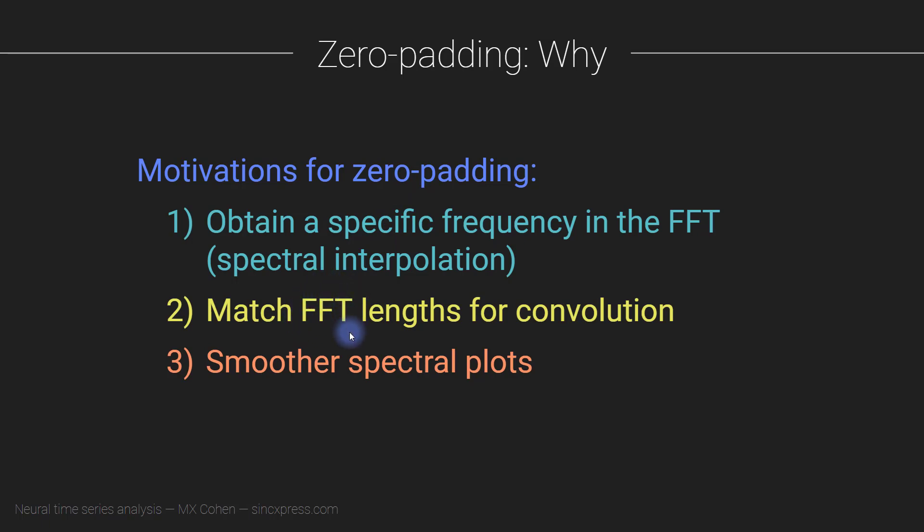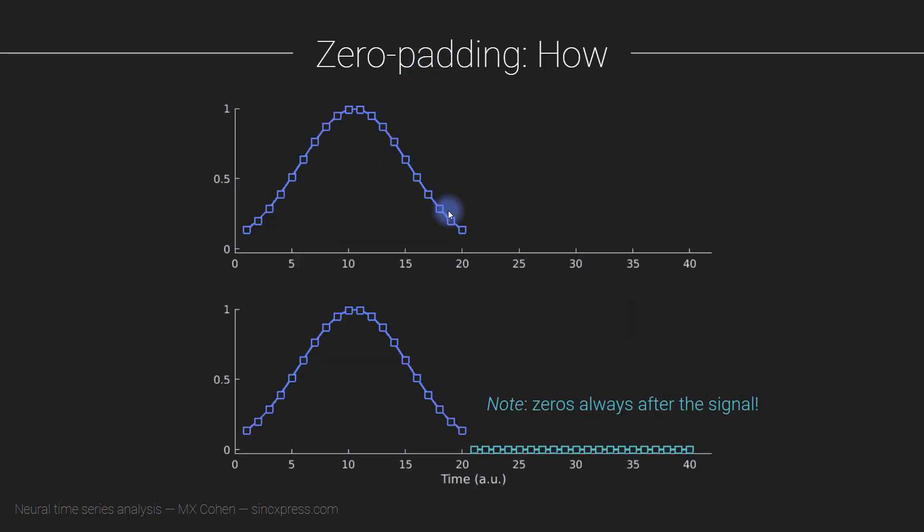I will talk a lot more about this idea in the next section of the course. So here you go: three reasons for zero padding, and the mechanism is always that you add zeros to the end of the signal like this.